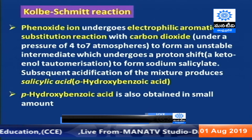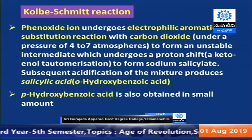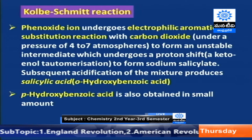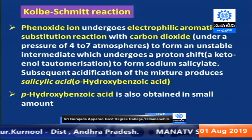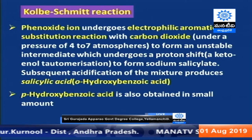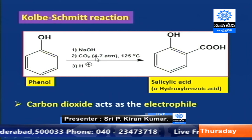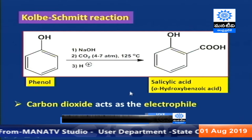Rudolf Schmidt modified the Kolbe reaction by taking carbon dioxide under pressure. In the Kolbe-Schmitt reaction, when phenol in the presence of sodium hydroxide is treated with CO2 under a pressure of 4 to 7 atmospheres at 125°C, it forms an unstable compound which undergoes keto-enol tautomerism to form sodium salicylate. On hydrolysis in the presence of acid, we obtain orthohydroxybenzoic acid — salicylic acid — as the major product, along with a minor amount of parahydroxybenzoic acid.